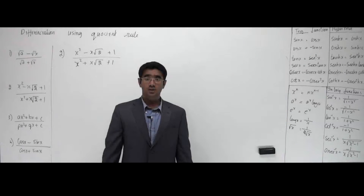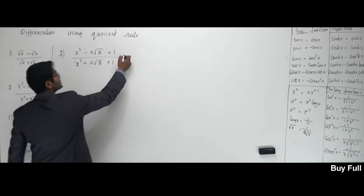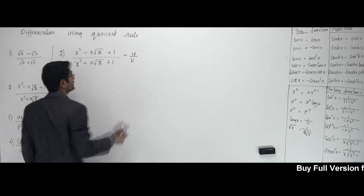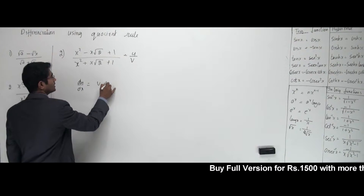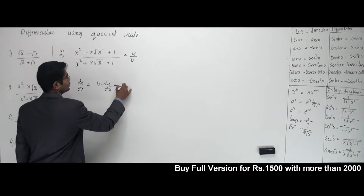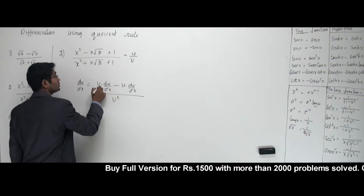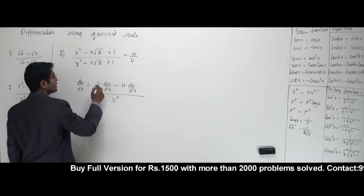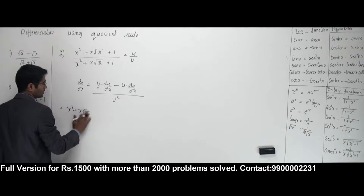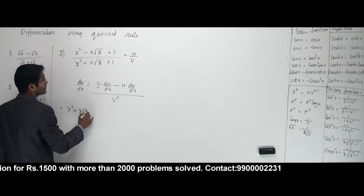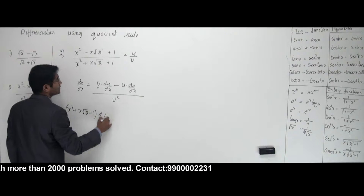All right guys, now let's work with the second problem here on the board. It's a simple quotient rule. This whole numerator is U and the denominator is V. The formula is D bar by DX equals V into DU by DX minus U into DV by DX, the whole thing divided by V squared. So V — the denominator — is X squared plus X root 2 plus 1.